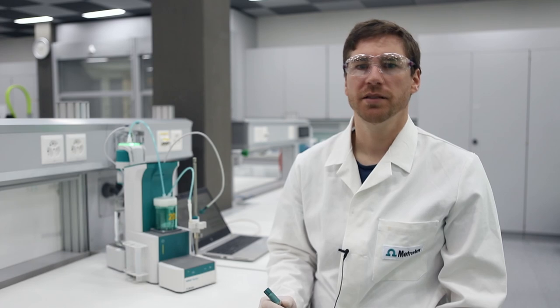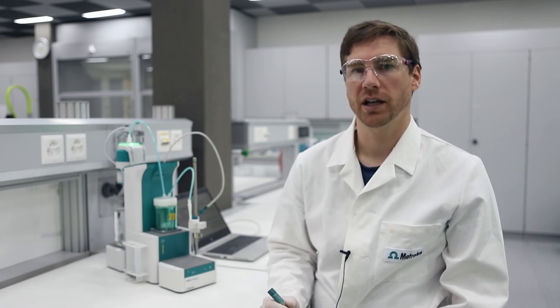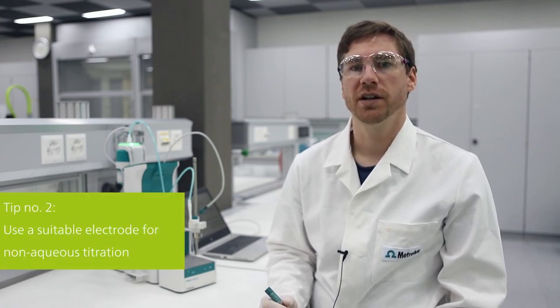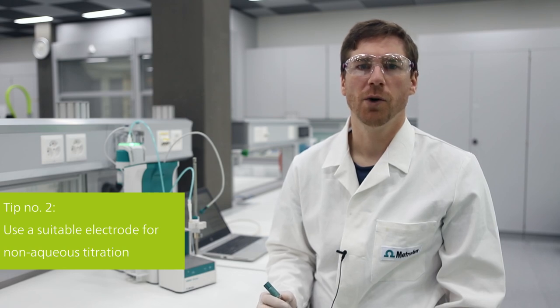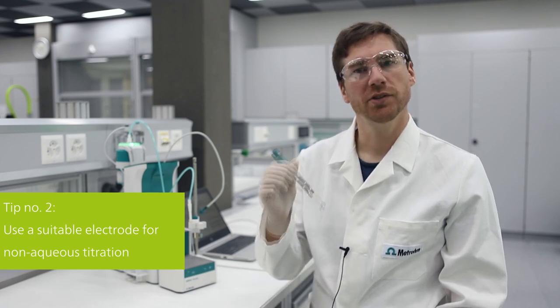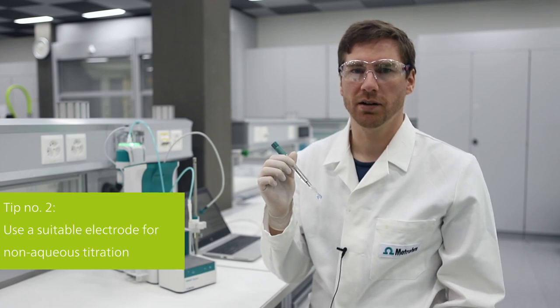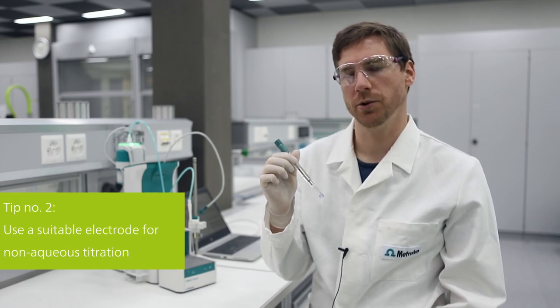Acid number determination is a non-aqueous titration. This makes it prone to electrostatic influences. So here is my tip number two: to avoid electrostatic effects, use an electrode with additional electrostatic shielding, for example the Metrohm Solvotrode.